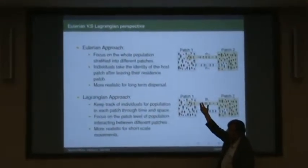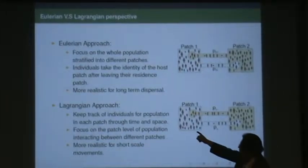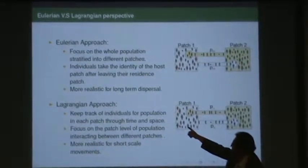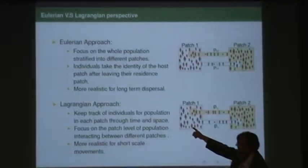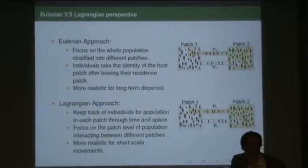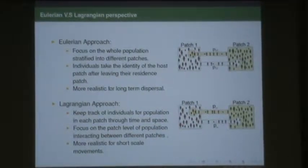Then I lose track of people. An Eulerian approach is this guy is resident here, it always remains resident up here, this is resident here, it's always resident up here. So how do we model that?